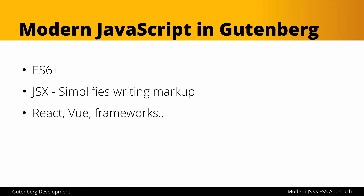JSX was originally part of React but has since been stripped out and exists on its own. Another common element of the modern JavaScript approach is a framework — React, Vue, Angular — to help build your application. Finally, it means having a modern toolset: something like Webpack for bundling, Babel to transpile code so it works across browsers, linters, and other tools, along with a well-configured editor or IDE with plugins and extensions.